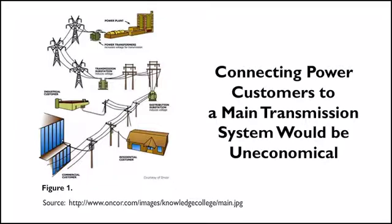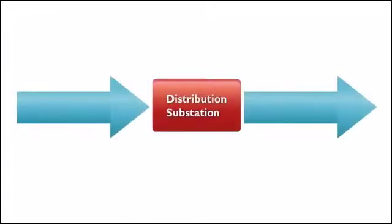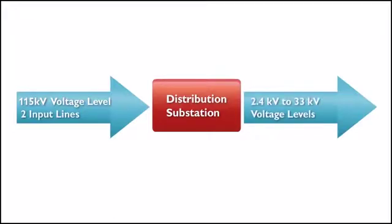The input for a distribution substation can often be a 115 kilovolt voltage level and will consist of two input lines. Outgoing distribution voltages will typically be medium voltage levels between 2.4 kilovolts and 33 kilovolts.